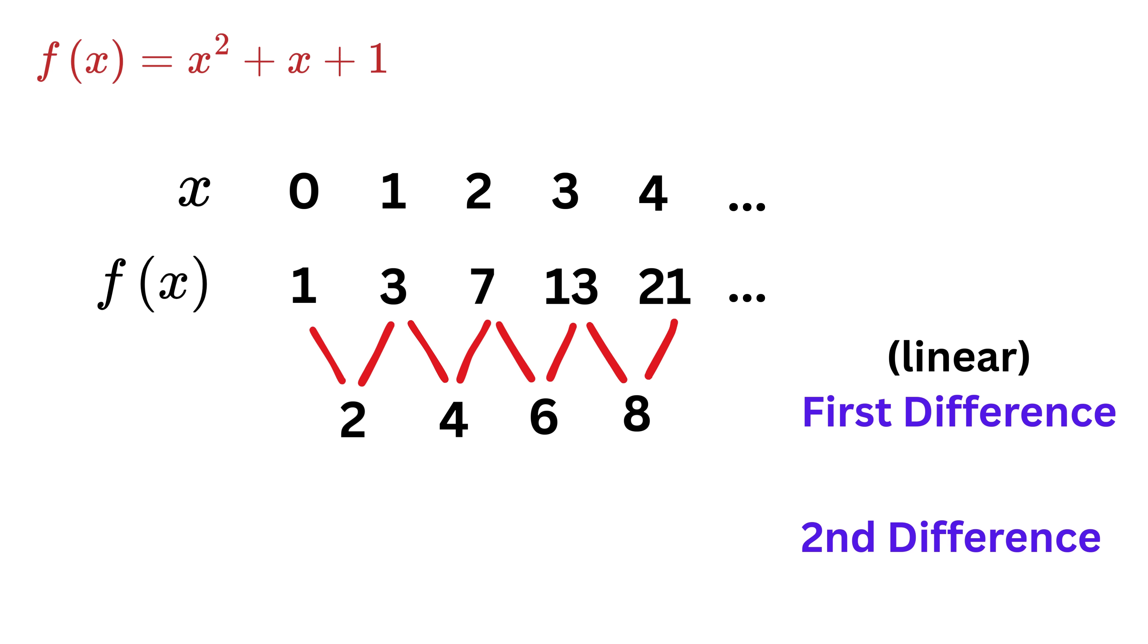Now if you look at the differences of those differences, which are called the second differences, we get 4 minus 2 as 2, then 6 minus 4 as 2, then 8 minus 6 as 2. So we find that the second differences become constant. Thus we can say a function is quadratic if the first differences of its output values become linear and the second differences of its output values become constant.